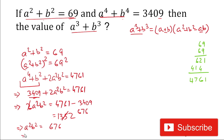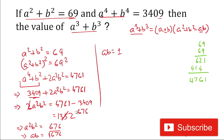From a²b² = 676, we can calculate the value of ab. Since 676 is the square of 26, therefore ab = 26.